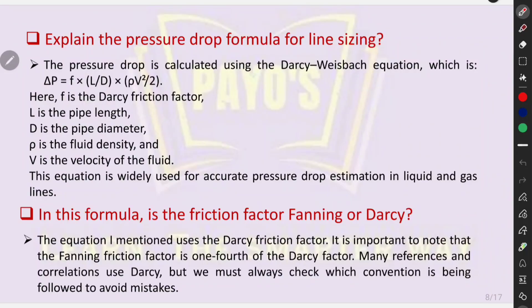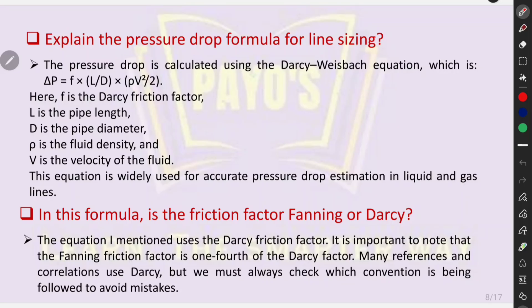Can you give me the pressure drop formula for line sizing? The pressure drop is calculated using the Darcy-Weisbach equation: ΔP = f × (L/D) × (ρV²/2), where f is the Darcy friction factor, L is pipe length, D is pipe diameter, ρ is fluid density, and V is velocity of fluid. This equation is widely used for accurate pressure drop estimation in liquid and gas lines. It is important to note that the Fanning friction factor is one-fourth of the Darcy factor. Many references use Darcy, but we must always check which convention is being followed to avoid mistakes.